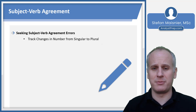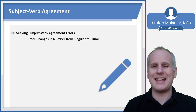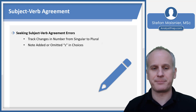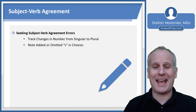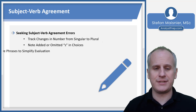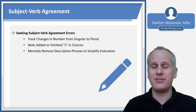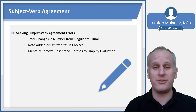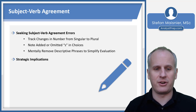When seeking subject-verb agreement errors, you want to track any changes in number from singular to plural in the underlined and non-underlined portions of the sentences presented. You want to note potentially added or omitted S's indicating plurals in the choices, and potentially remove from consideration descriptive phrases that might be between the subject and the verb to simplify your evaluation of the proper number — singular or plural — for both the subject and the verb.